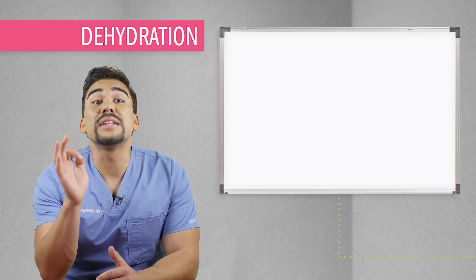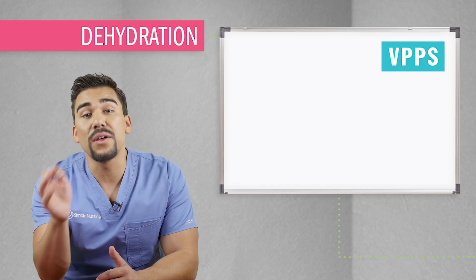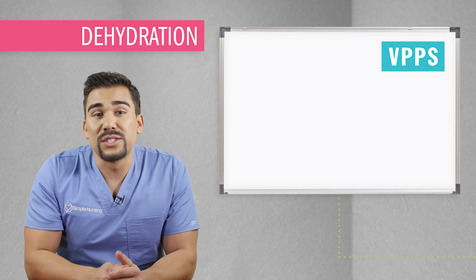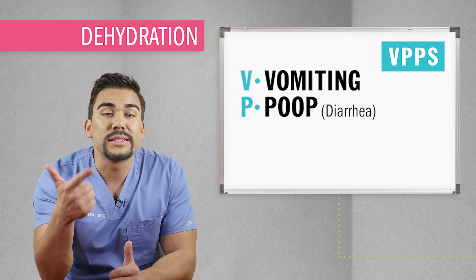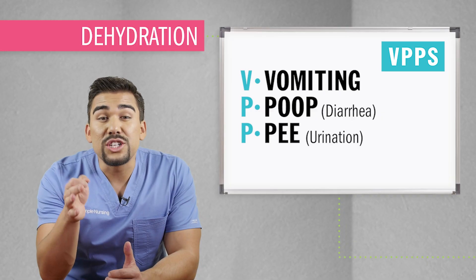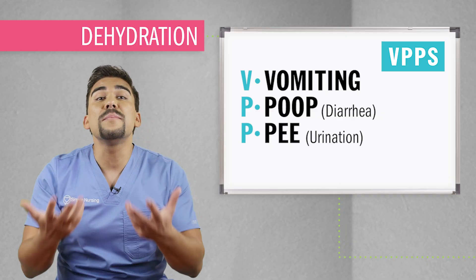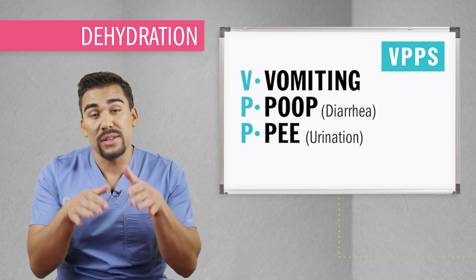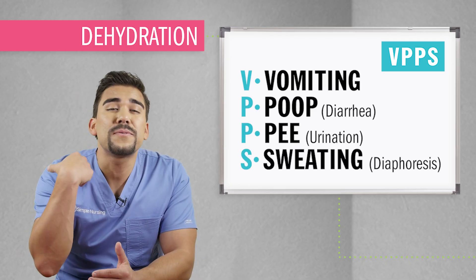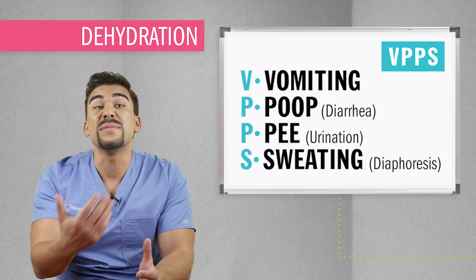To remember causes of fluid loss, we use the acronym VPPS: vomiting; pooing, which is diarrhea; peeing or urination, most commonly seen with patients on diuretics that drain water from the body; and sweating, also called diaphoresis, usually from extreme conditions like heat exhaustion or fever.